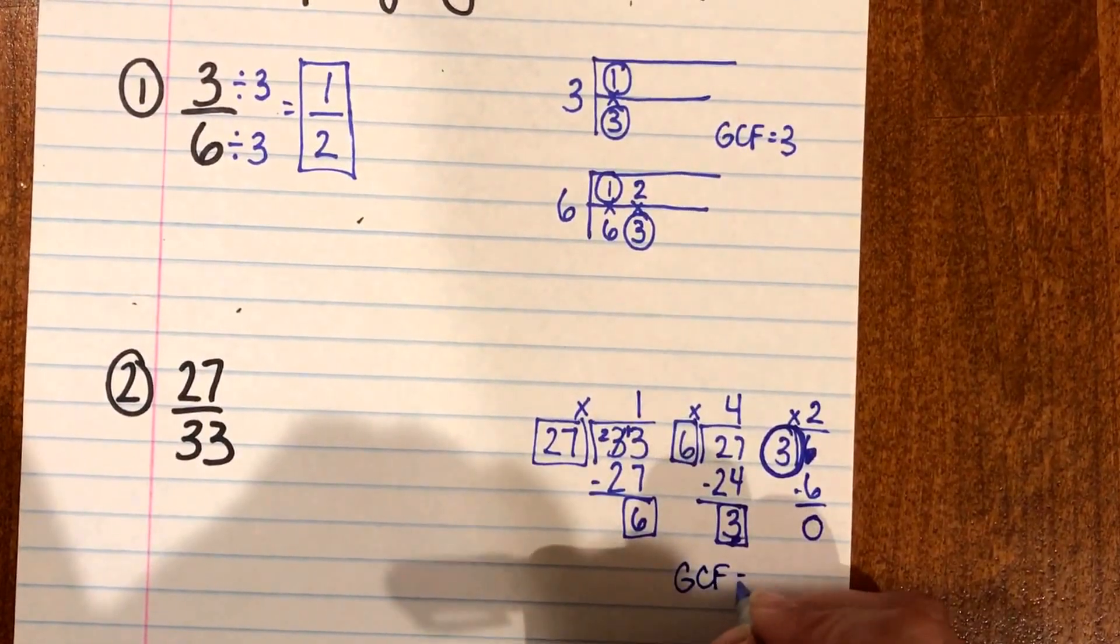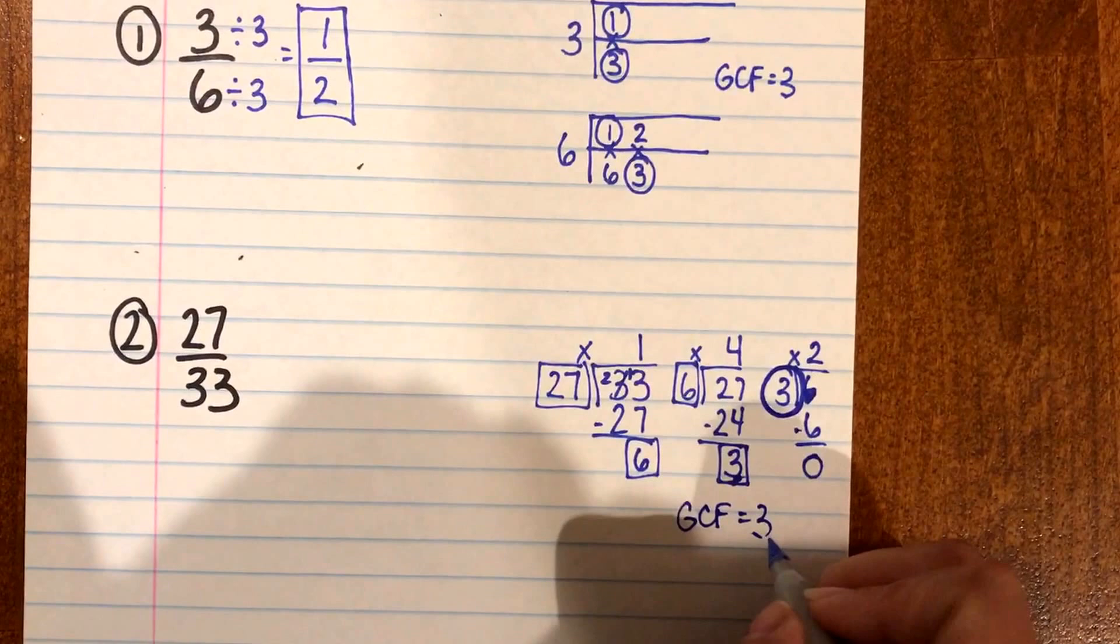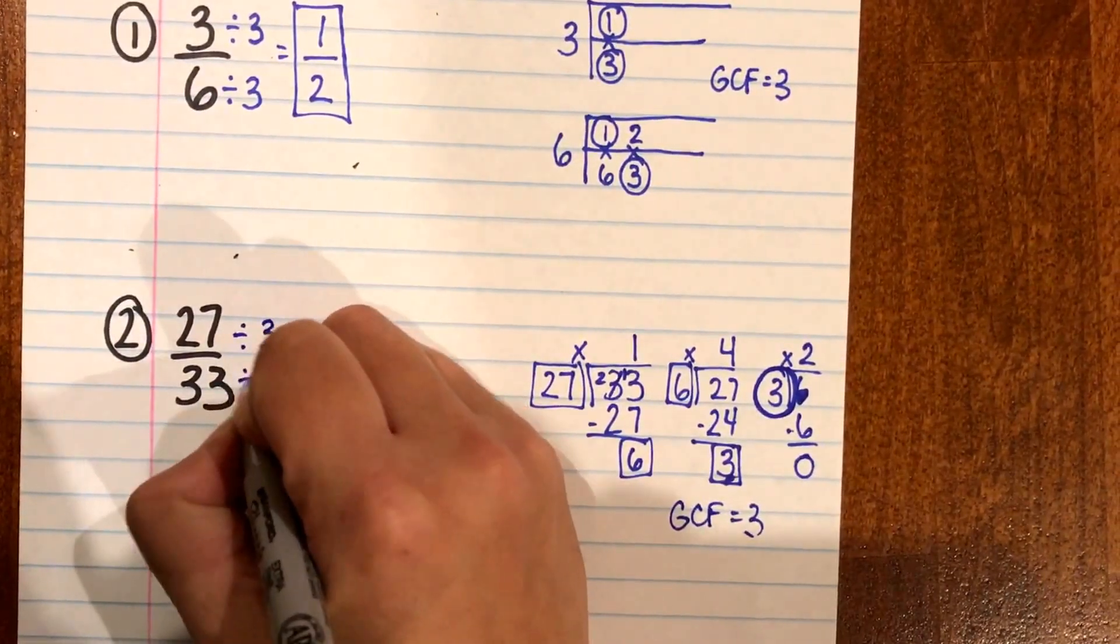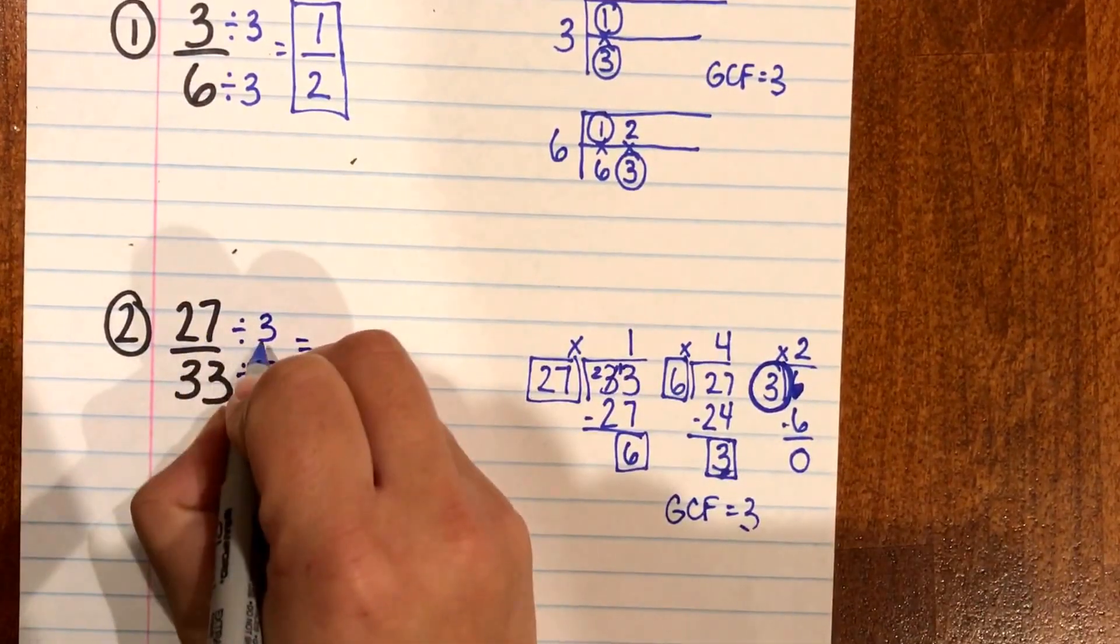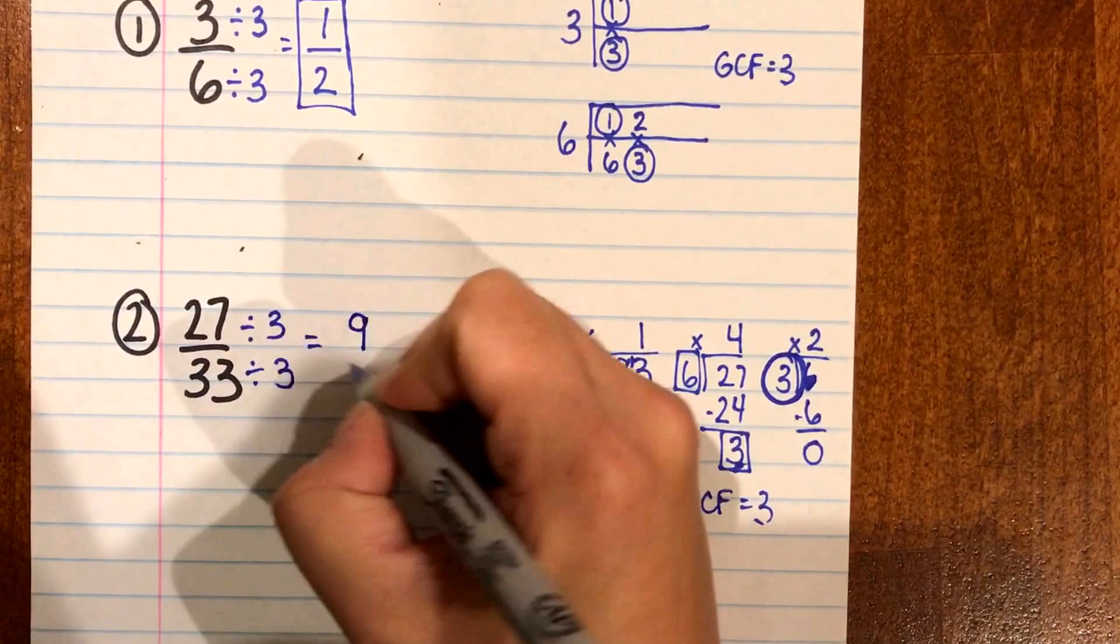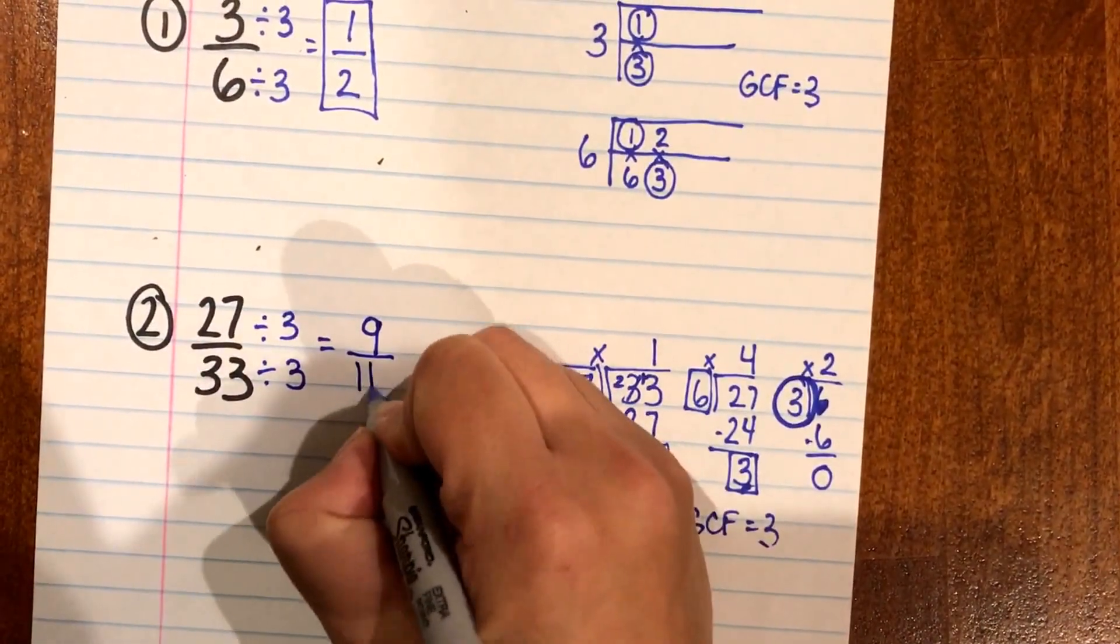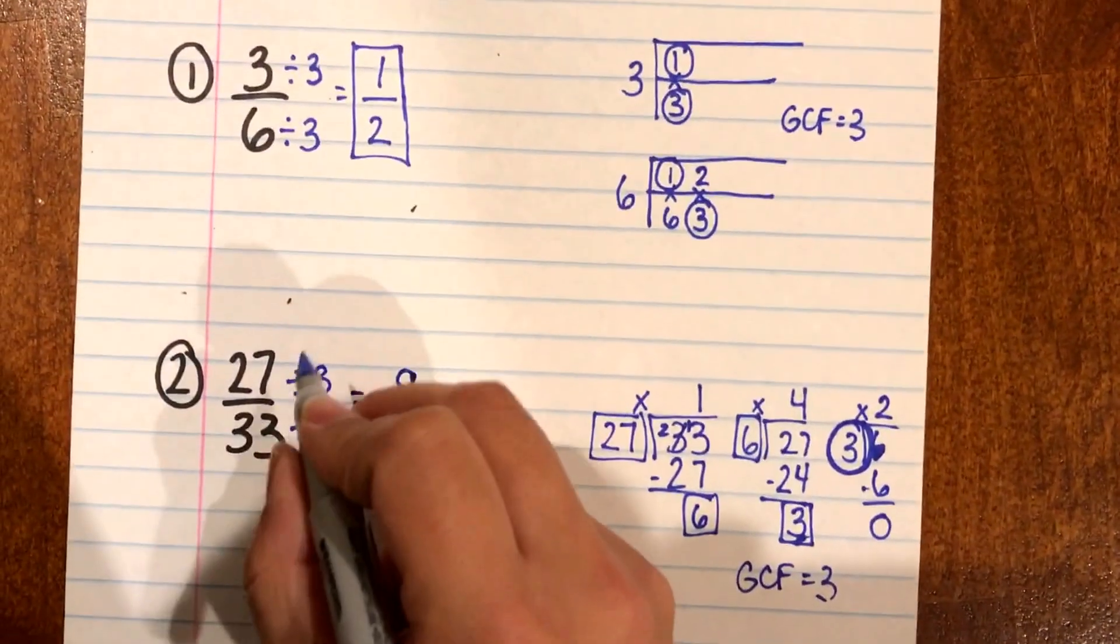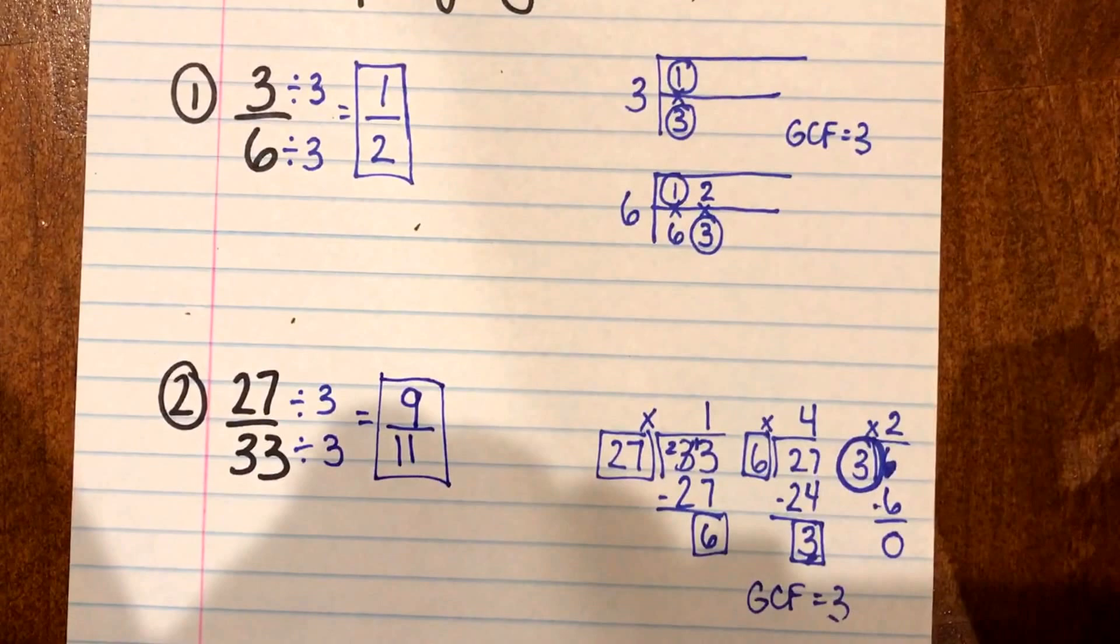So using my GCF again I'm gonna come back to my numerator and my denominator and I'm gonna divide it by 3. So 27 divided by 3 is 9 or 9 times 3 is 27. And 33 divided by 3 is 11 or 11 times 3 is 33. So I know that 27 over 33 can be simplified to 9 over 11.